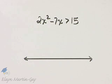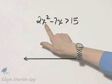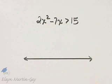Let's be very careful and correctly identify this inequality. Notice this is a quadratic inequality, so we're going to use a number line method to solve this inequality.